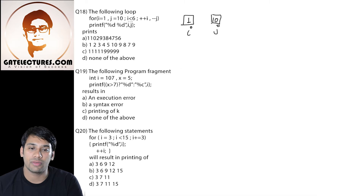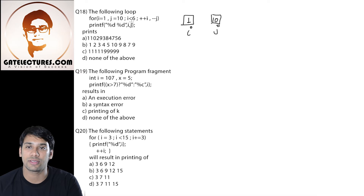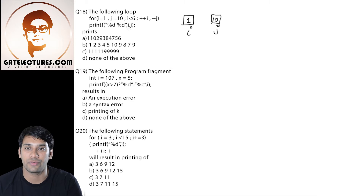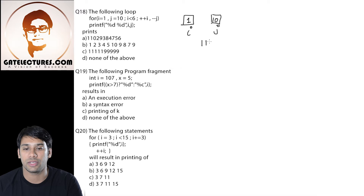Then we are having this condition. In this condition, I am checking whether the value of i is less than 6 or not. The value of i is 1 which is less than 6. Therefore, we will come to this printf statement and it is going to print the value of i and j. Value of i is 1 and value of j is 10 initially, so it is going to print 1 and 10.